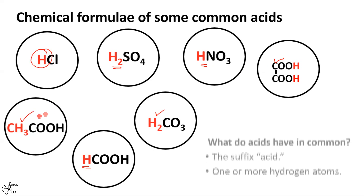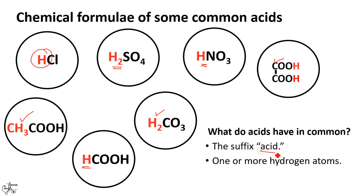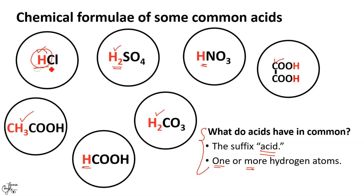Thus we can generalize that all acids have the suffix 'acid' in their names and at least one or more hydrogen atoms in their chemical formulae — here you can see one, and here you have two. Kindly note that in your higher classes you will learn various other concepts which state that there are substances which do not contain hydrogen yet are classified as acids, but for your Class 10 level this generalization holds true.